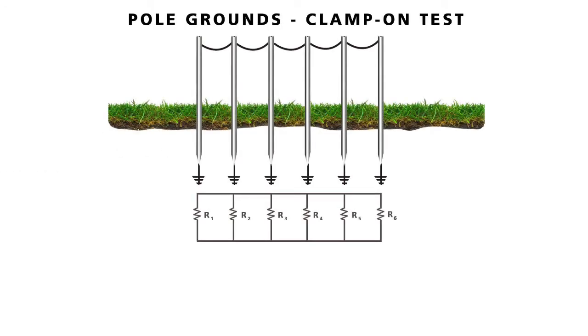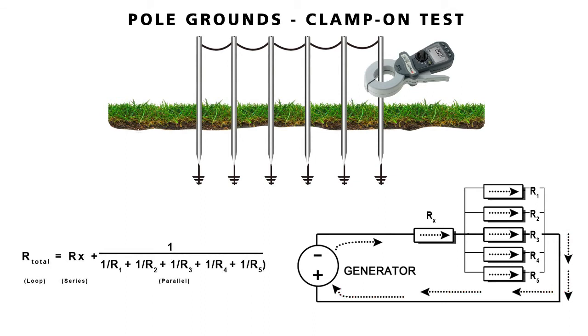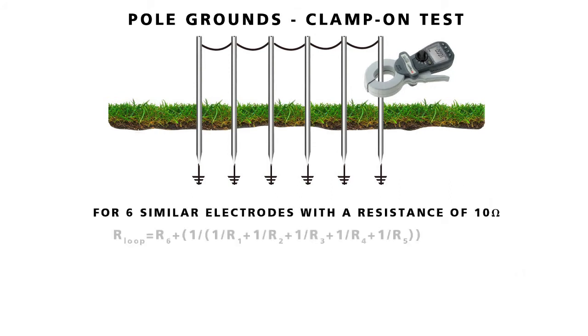Imagine a string of pole grounds paralleled together through a grounded system neutral, each with a 10 ohm resistance. The clamped rod becomes a resistance in series with the combined parallel resistance of all the other rods. The remaining rods in system neutral provide the return path. The measurement is the resistance of the rod under test plus the elements of the return path. The return elements add to the reading and therefore contribute an error.